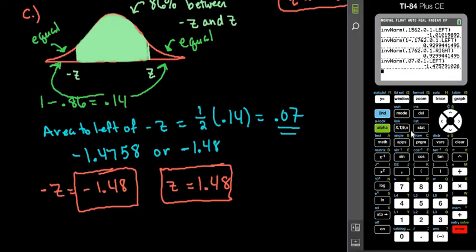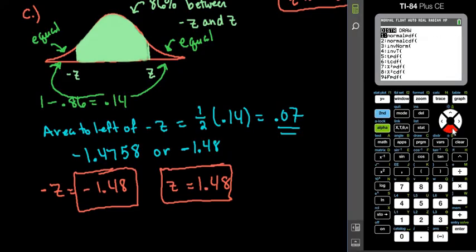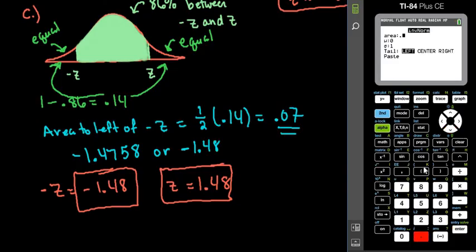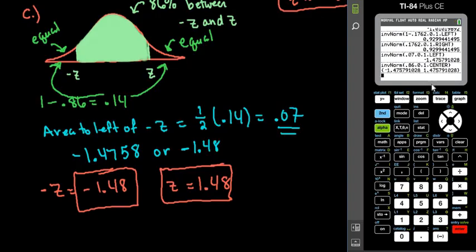If you have the center feature, it's a lot less work. All you would have to do is inverse norm, type in 0.86, go down and select center, paste it and hit enter. And notice this gives you both the negative and the positive. So if you have that option, it's definitely something I would use. If you don't have that option, the default is to the left, and you just have to find the area to the left. As always, thanks for watching.